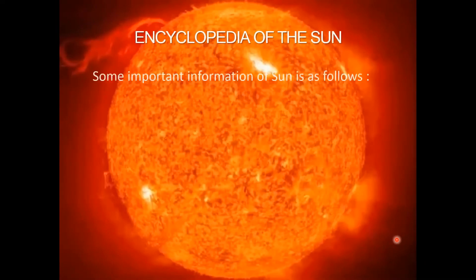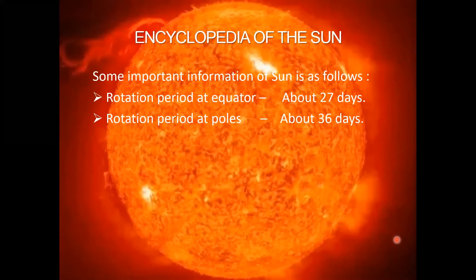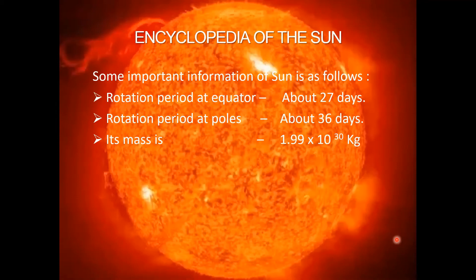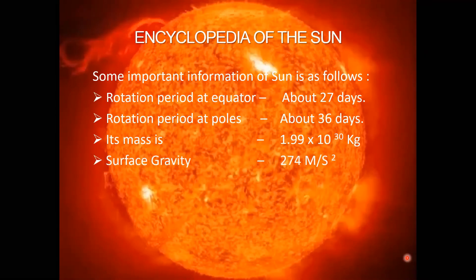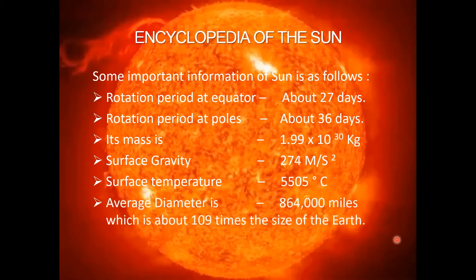Encyclopedia of the Sun — some important information: rotation period at the equator is about 27 days; rotation period at the poles is about 36 days; its mass is 1.99 × 10^30 kg; surface gravity is 274 meters per second squared; surface temperature is 5,505 degrees Celsius; average diameter is 864,000 miles, which is about 109 times the size of the Earth.